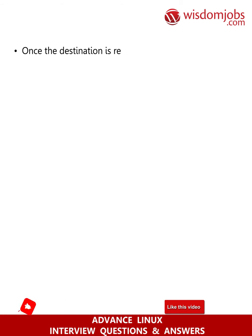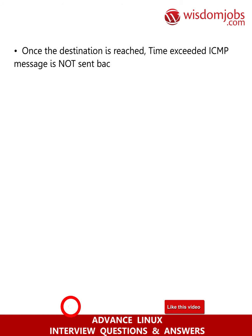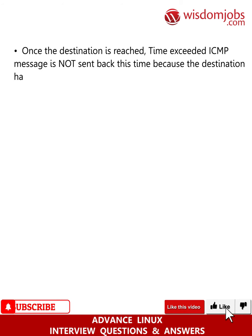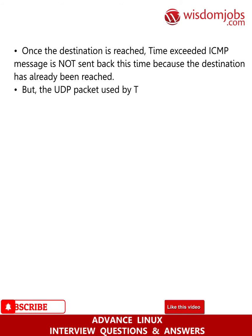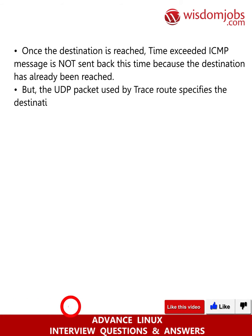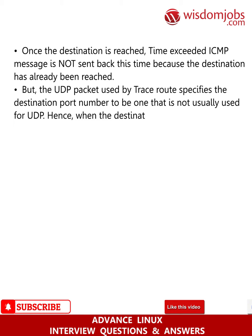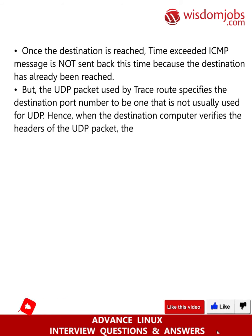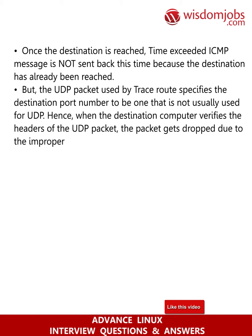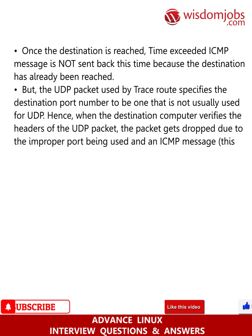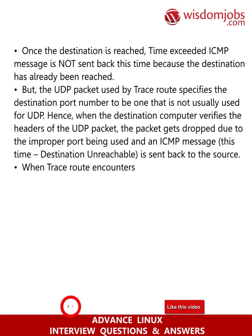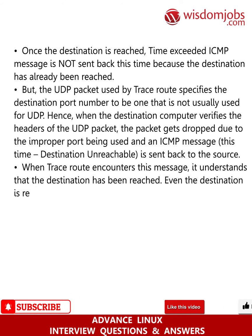Once the destination is reached, a time exceeded ICMP message is not sent back, because the destination has already been reached. But the UDP packet used by Traceroute specifies the destination port number to be one that is not usually used for UDP. Hence, when the destination computer verifies the headers of the UDP packet, the packet gets dropped due to the improper port being used, and an ICMP destination unreachable message is sent back to the source. When Traceroute encounters this message, it understands that the destination has been reached. The destination is reached three times to get the average of the round trip time.